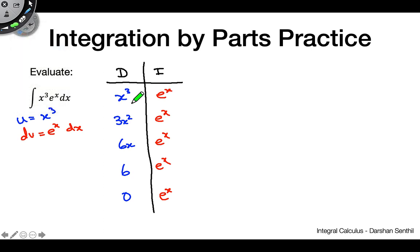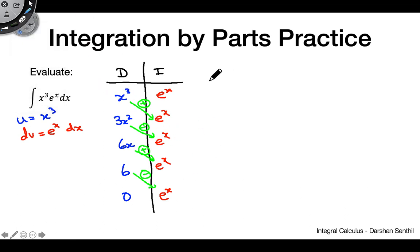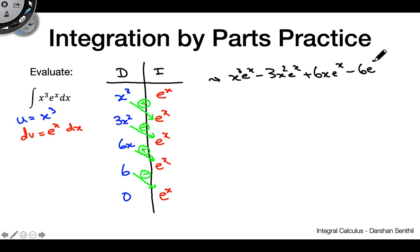We put in our alternating signs — positive, negative, positive, negative, positive — drawing diagonal arrows. Multiplying down the arrows gives our final answer: x cubed e to the x minus 3x squared e to the x plus 6x e to the x minus 6 e to the x plus C.